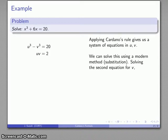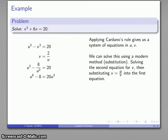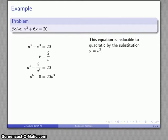So let's solve that second equation for v, and now I have v equals 2 over u. I'll substitute that into my first equation, and I'll end up with a 6-degree equation, which is actually reducible to quadratic if I use the substitution y equal to u cubed. So rewriting that, that's u cubed squared minus 8 equals 20u cubed.